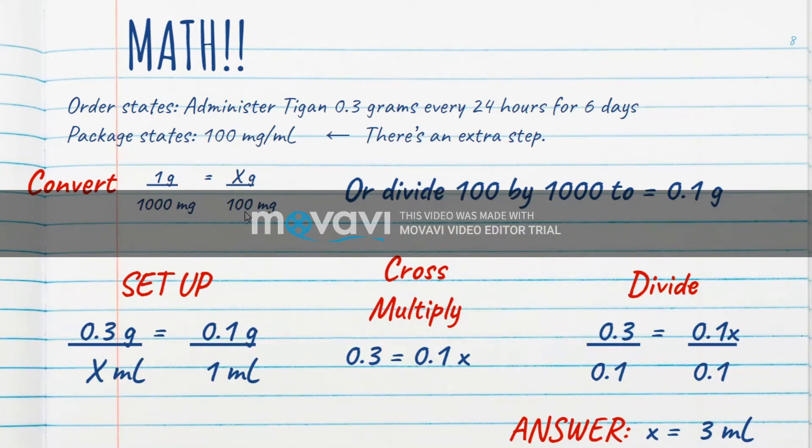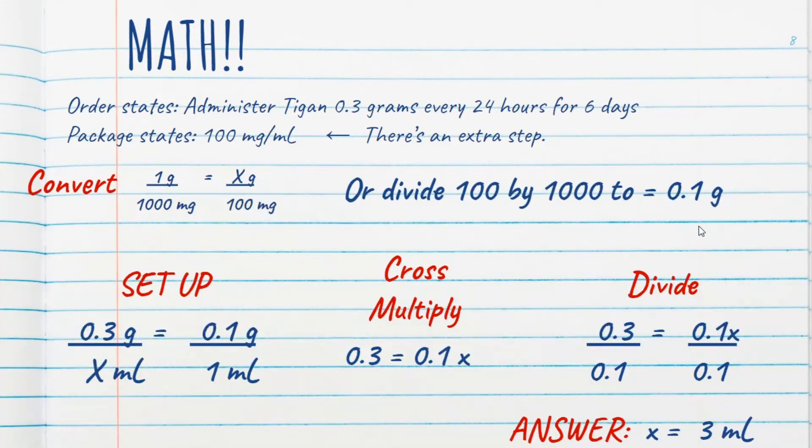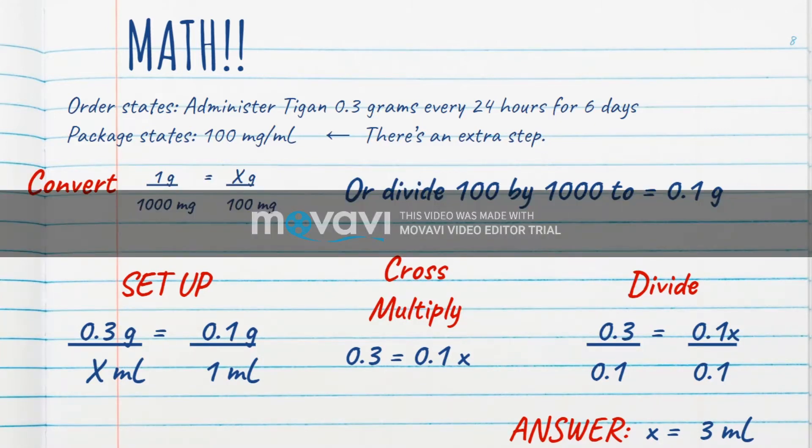And then you cross multiply and divide that answer out. Now, we end up getting 0.1 grams. So if you learned how to do the division and multiplication steps to move through conversions, that's fine with me as long as you understand what you're doing and get the correct answer.